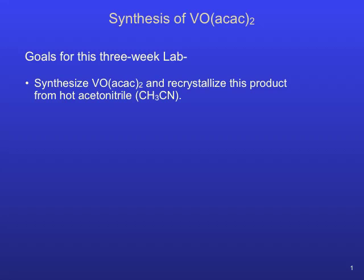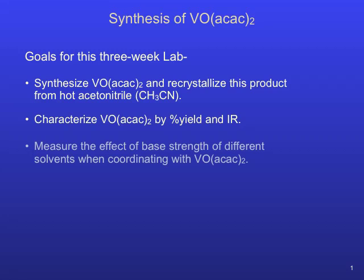In this multi-week experiment, you will synthesize the transition metal complex vanadyl-bis-acetylacetinate and purify it by recrystallization from hot acetonitrile. A percent yield is determined for your product vanadyl-bis-ac-ac and an IR taken of this compound. The prefix 'bis' denotes the presence of two bidentate ac-ac ligands in this transition metal complex. You will dissolve your purified vanadyl-bis-ac-ac in a series of solvents and determine their relative strengths as Lewis bases by comparing the UV-vis of your product dissolved in each solvent.